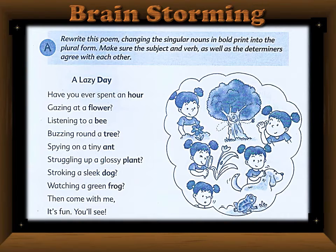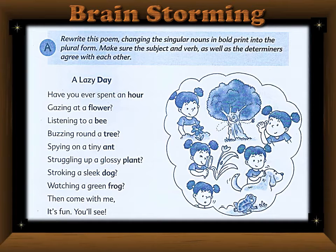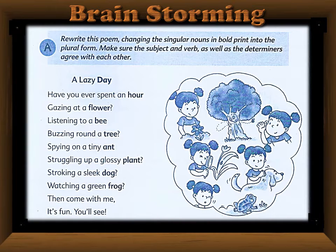The title of the poem is 'A Lazy Day.' The poem reads: Have you ever spent an hour gazing at a flower, listening to a bee buzzing round a tree, spying on a tiny ant struggling up a glossy plant, stroking a sleek dog, watching a green frog, then come with me, it's fun, we'll see. In the first line, 'hour' is singular; in the second, 'flower' is singular.